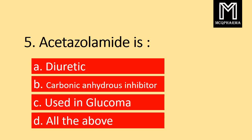Question number 5. Acetazolamide is: Option A Diuretic, Option B Carbonic Anhydrous Inhibitor, C used in Glaucoma, D all the above. Correct answer: Option D all the above.